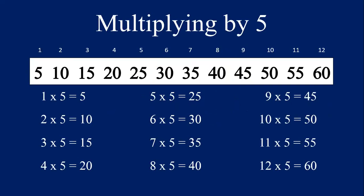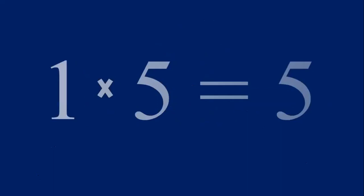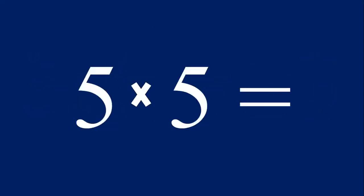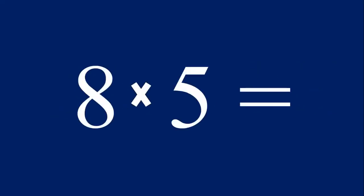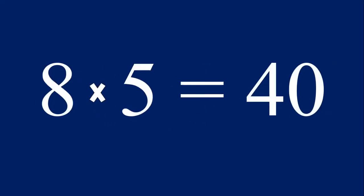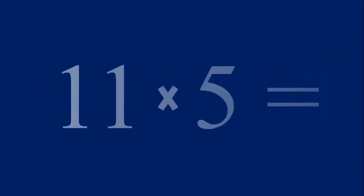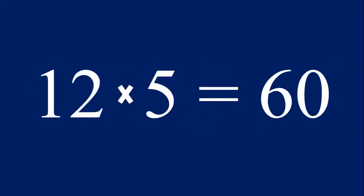Very good job. Now let's practice the equations and answers together, multiplying one through 12 by five. One times five equals five, two times five equals 10, three times five equals 15, four times five equals 20, five times five equals 25, six times five equals 30, seven times five equals 35, eight times five equals 40, nine times five equals 45, ten times five equals 50, eleven times five equals 55, and 12 times five equals 60. Well done.